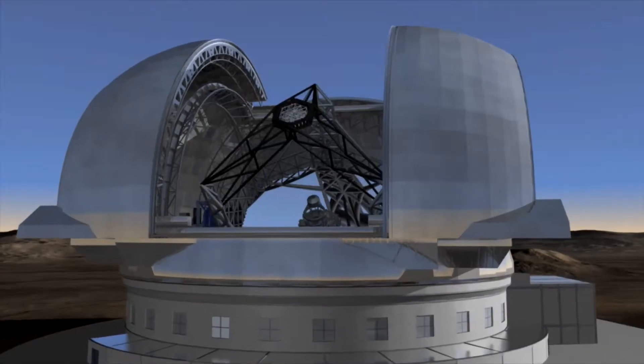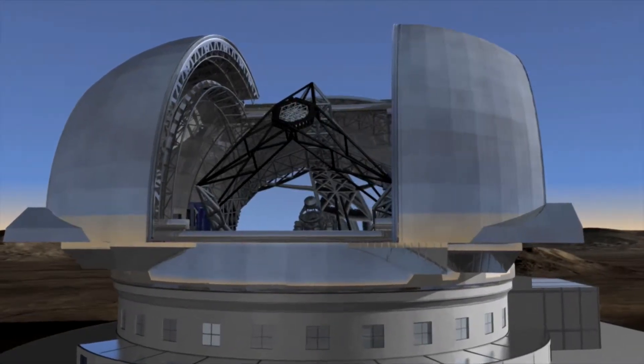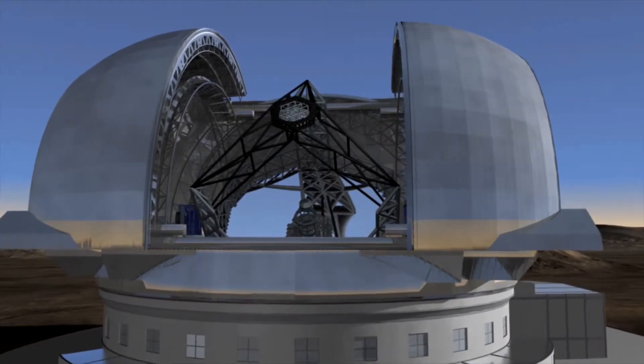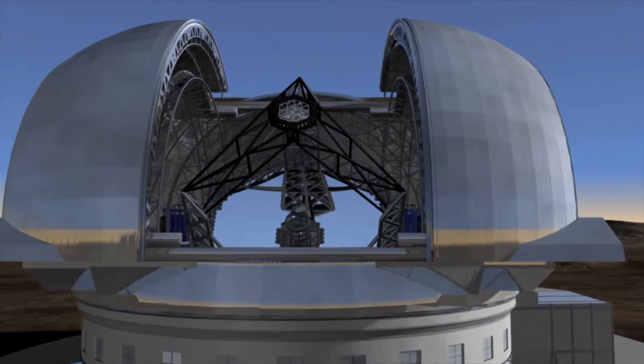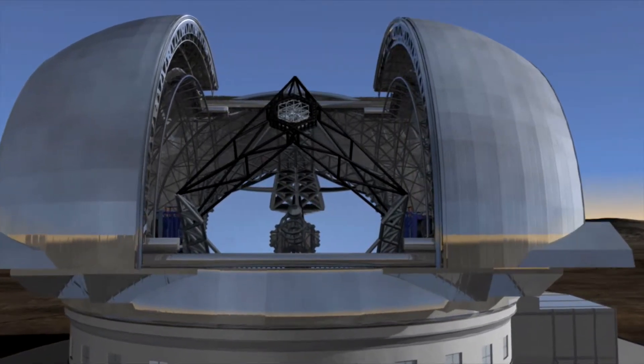Hundreds of individual segments make up one enormous mirror as tall as a six-story apartment. In Europe, plans are ready for a European extremely large telescope. At 42 meters in diameter, its mirror will be as large as an Olympic swimming pool, twice the surface area of the 30-meter telescope.